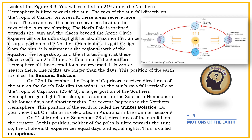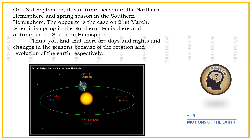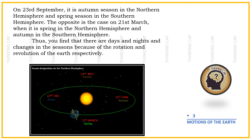Do you know that Christmas is celebrated in Australia in the summer season? On the 21st of March and September 23rd, direct rays of the Sun fall on the equator. At this position, neither of the poles is tilted towards the Sun, so the whole Earth experiences equal days and equal nights. This is called an equinox. On the 23rd of September, it is autumn season in the Northern Hemisphere and spring season in the Southern Hemisphere. The opposite is the case on the 21st of March, when it is spring in the Northern Hemisphere and autumn in the Southern Hemisphere.